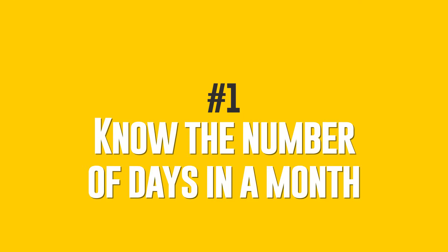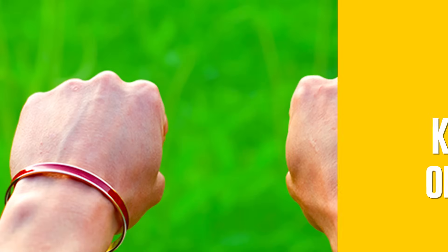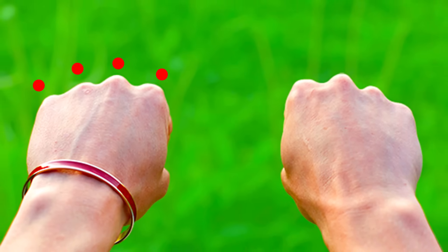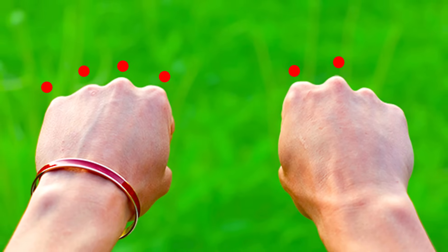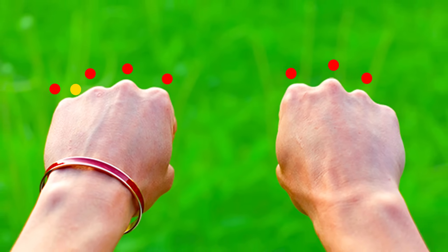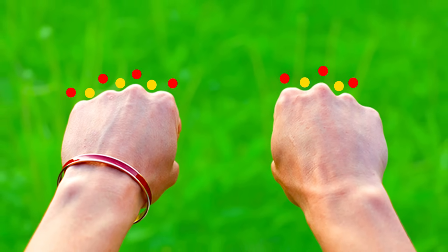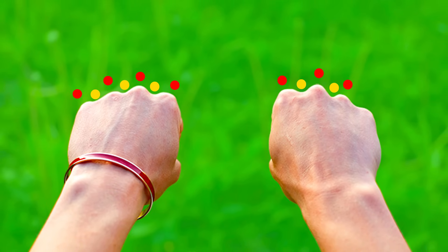Number 1: Know the number of days in a month. Make a fist and start counting the months by knuckles. Each knuckle bump and gap is a separate month. If you count on one hand, then after reaching the end, start again with the knuckles of the index finger. Let's see.